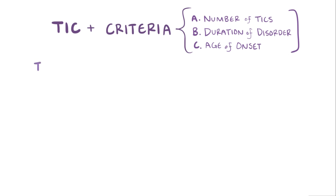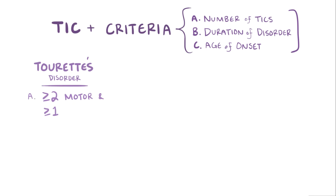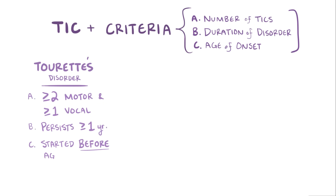For a diagnosis of Tourette's disorder, an individual must have multiple motor tics and at least one vocal tic. However, these don't have to happen at the same time — the important thing is that both motor and verbal tics are present. The frequency of individual tics might change over time, but they need to persist for at least one year. Finally, the tics must have started before the age of 18, and in fact they most often appear between the ages of 4 and 6. Of the three types of tic disorders, Tourette's is considered to be the most severe.